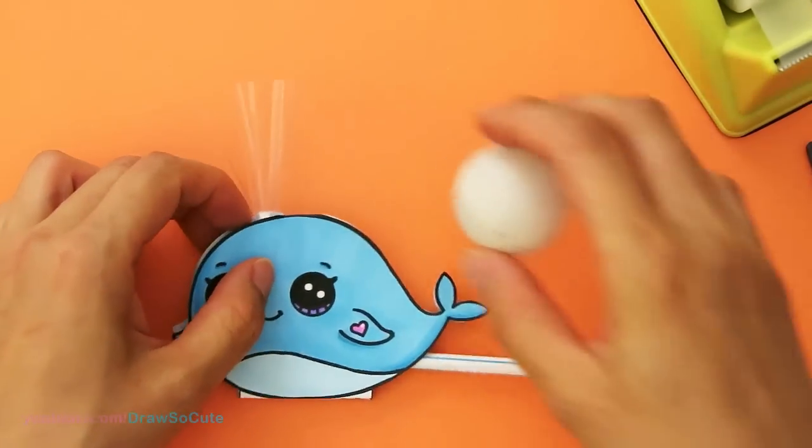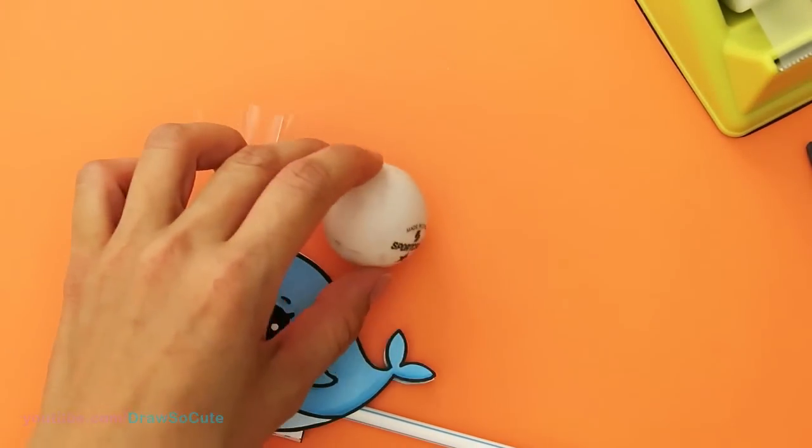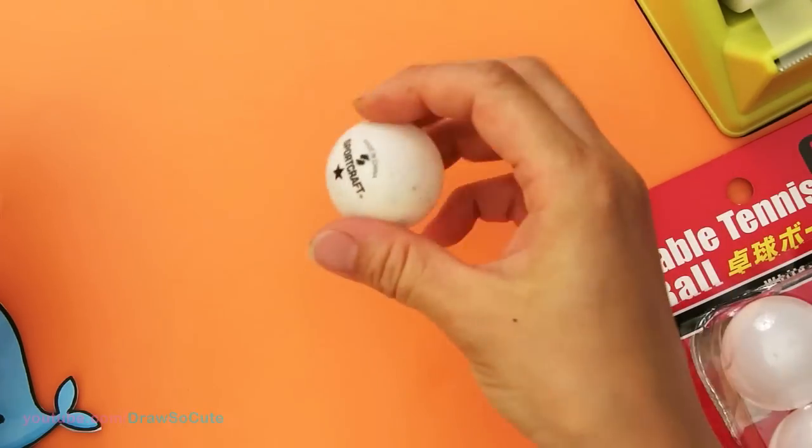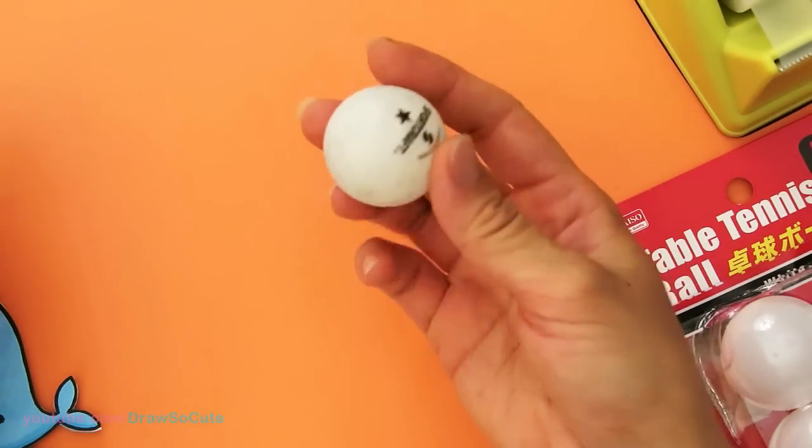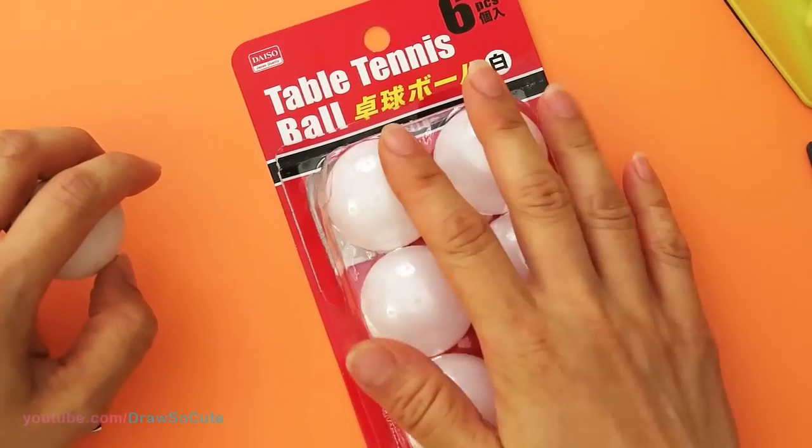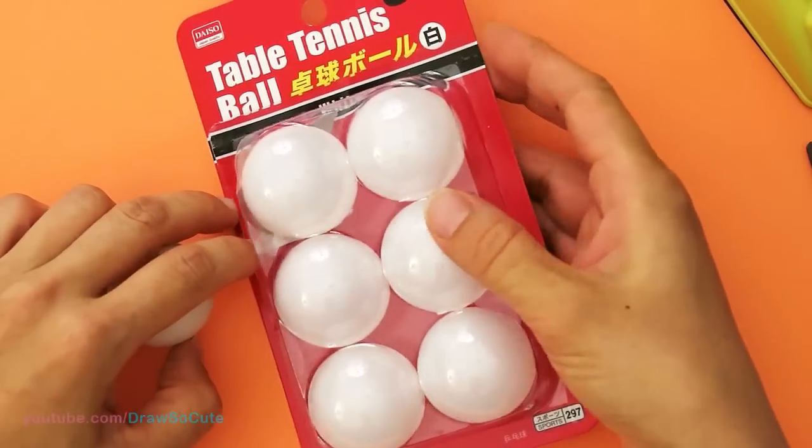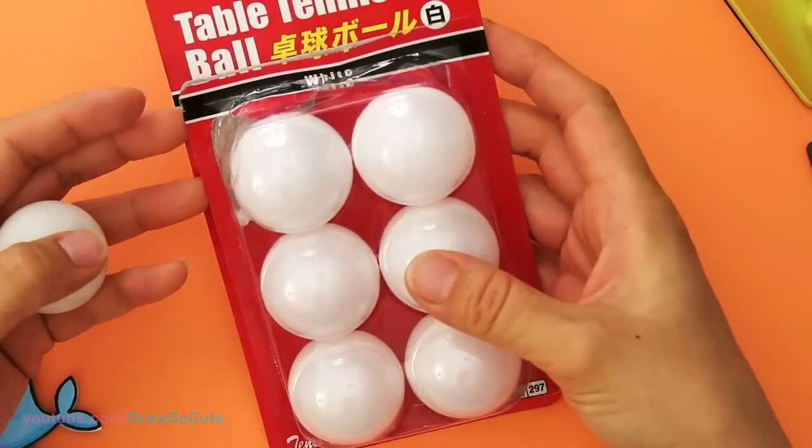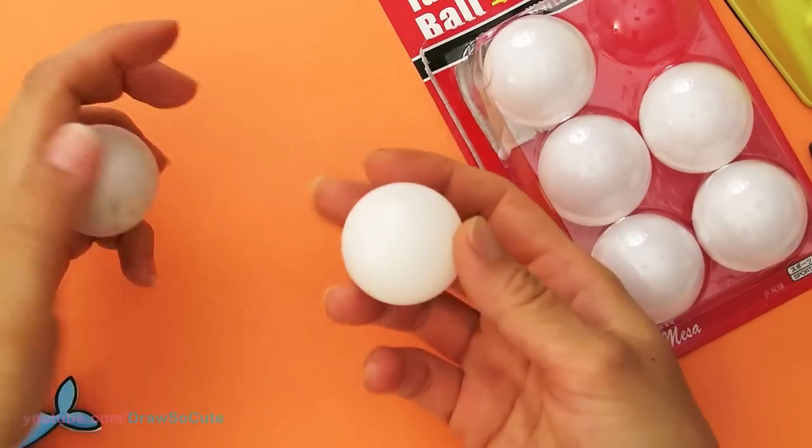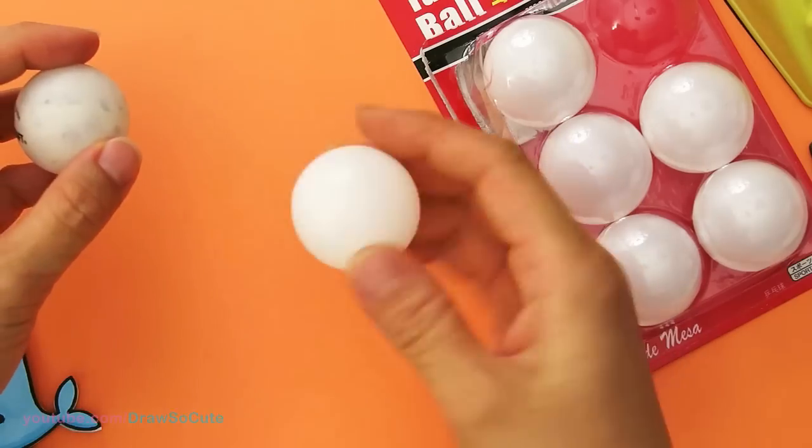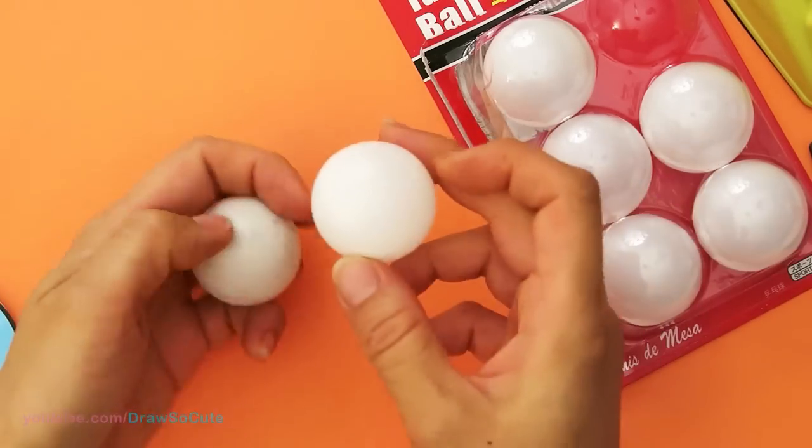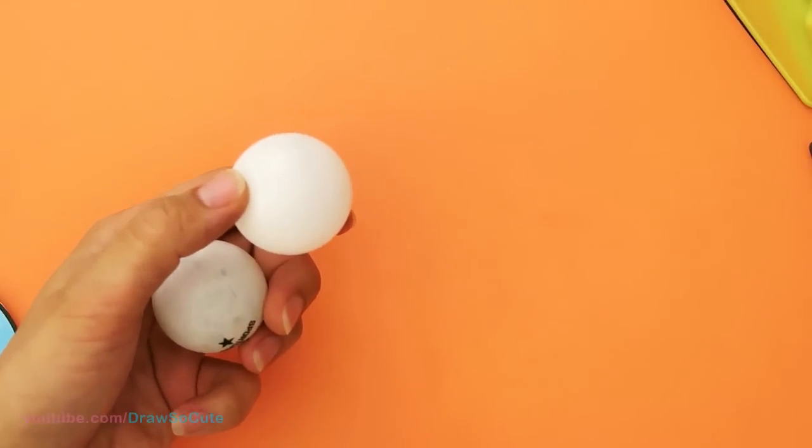So I did a lot of research for you and I found that these balls right here. So this right here is a real professional ping pong ball. So you can hear the difference. And I went to Daiso, which is that Japanese store that sells things for like $1.50. It's like a 99 cent store. And I found these balls, which are also supposed to be ping pong balls, but they're a lot lighter, actually. They're not as crisp in sound. And I found that these work so much better because they're actually a lot lighter.